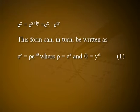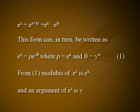This can be written as eᶻ = ρ·eⁱᶿ, where ρ = eˣ and θ = y. From this, the modulus of eᶻ is eˣ and an argument of eᶻ is y. The number ρ = eˣ is always positive, since it is the modulus of the complex number eᶻ. Because of this, eᶻ ≠ 0 for any complex number z.